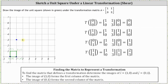Now that we have the four points that make up the new vertices, we can sketch the transformation of the unit square under the transformation matrix A. This type of transformation is called a shear. Notice this method did take quite a bit of work because we had to find four matrix products.